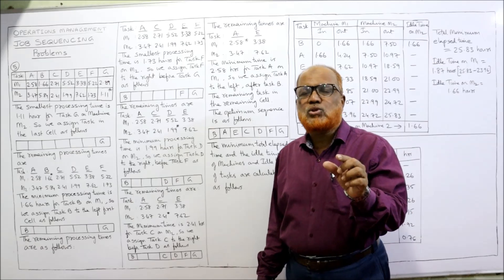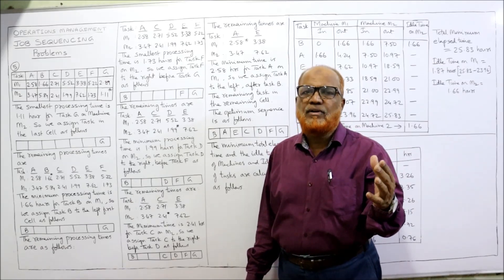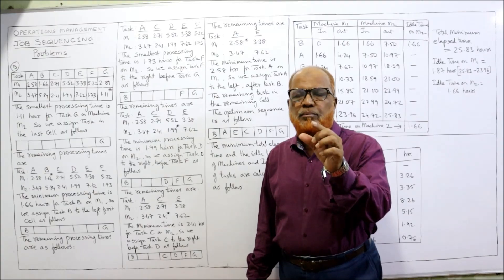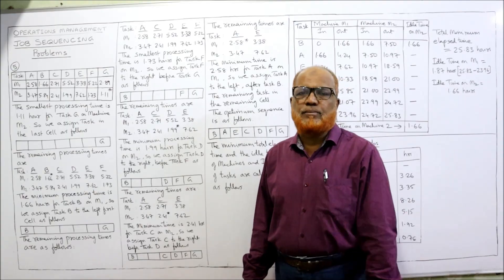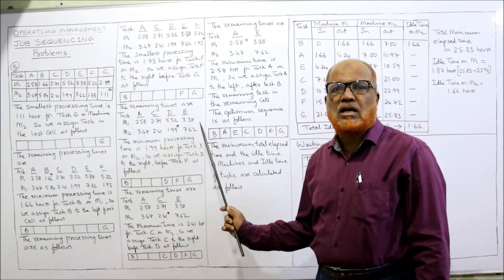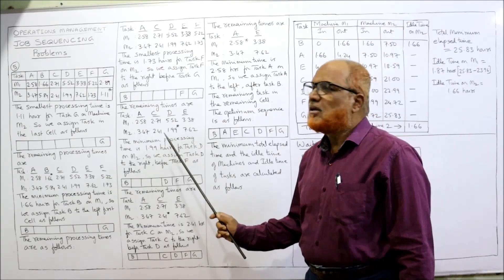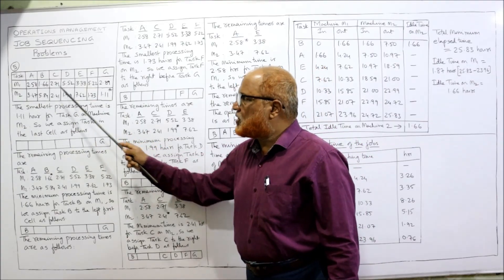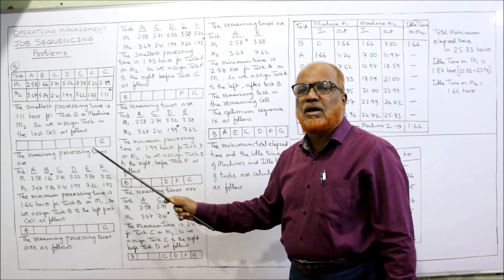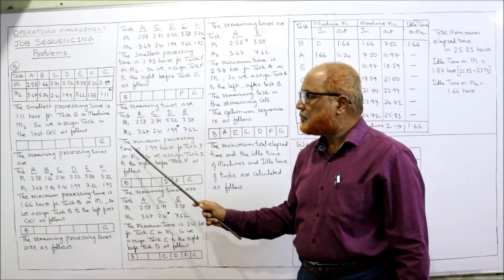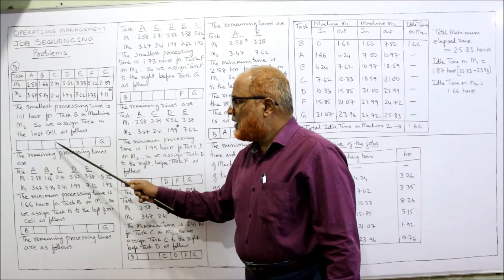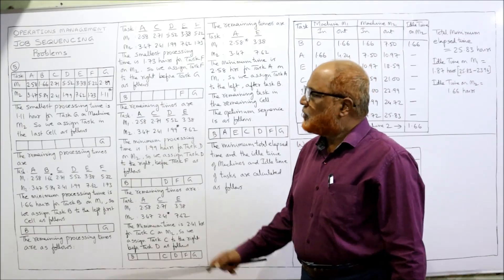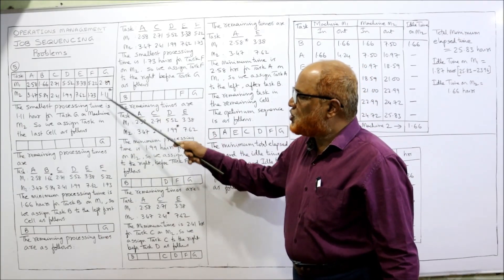If the smallest time is on the first machine, assign from the left. If the minimum time is on the second machine, assign to the last position on the right. Here, task G is on M2, so task G will be assigned in the last cell — cell seven out of seven. We write G in the last cell.